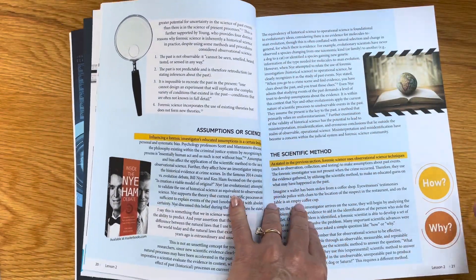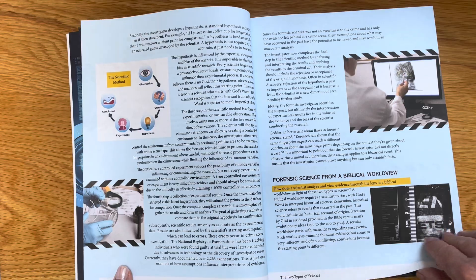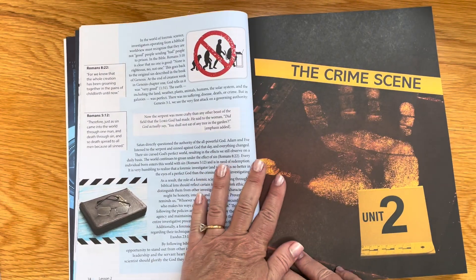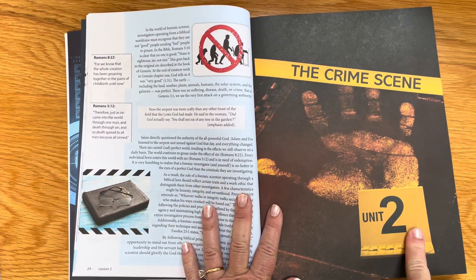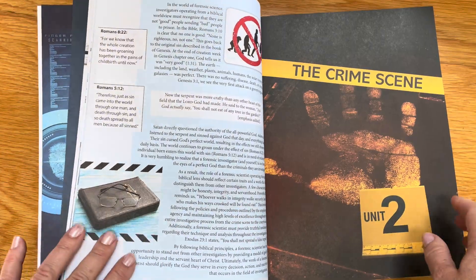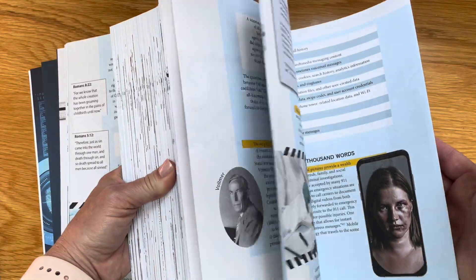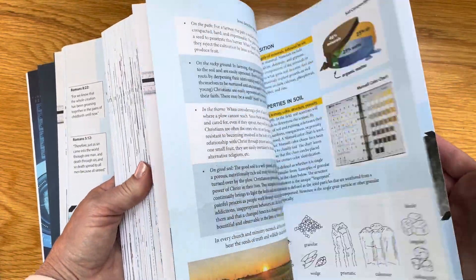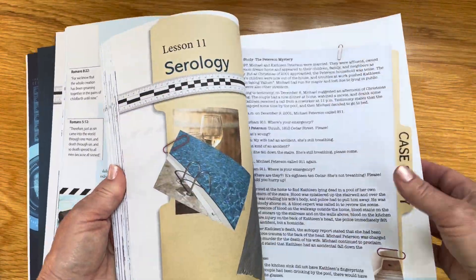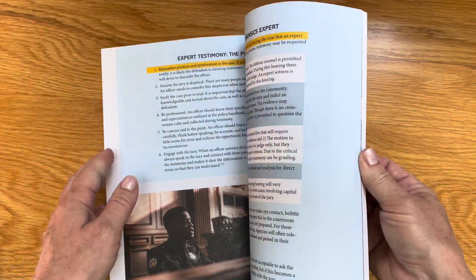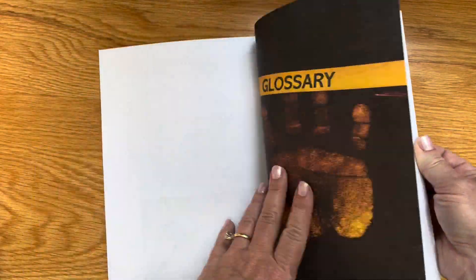Now I'm going to show you, just flip through like this so you can kind of get an idea of what the book looks like. This is a paperback book, and then at the end there is a glossary and footnotes.